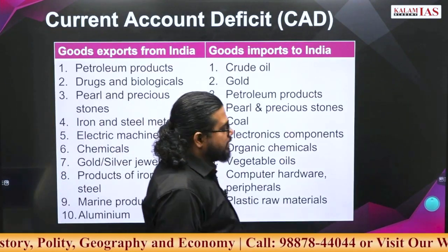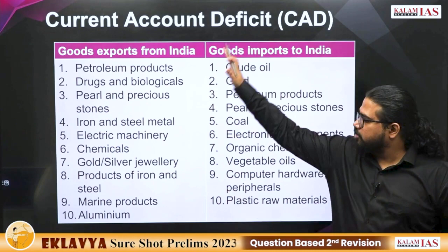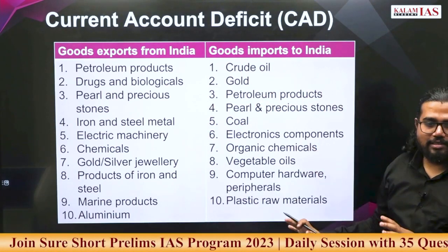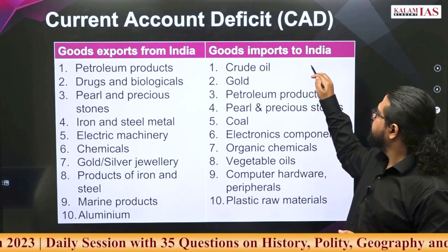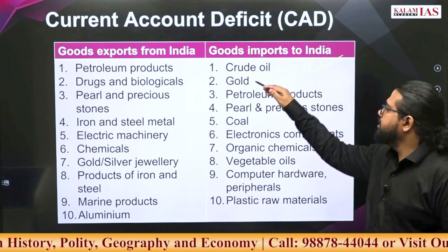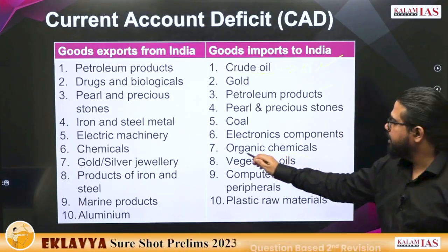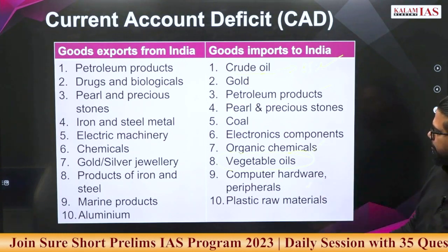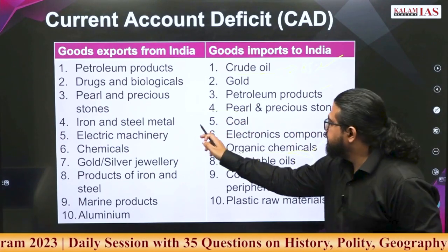What are the major items of India's imports and exports? Questions have been framed from these. India's most imported item is obviously crude oil — around 85% of India's crude oil demand is met by imports. After crude oil and petroleum products, other key imports include vegetable oil, computer materials, plastics, raw materials, organic chemicals, and coal. India is still importing coal.